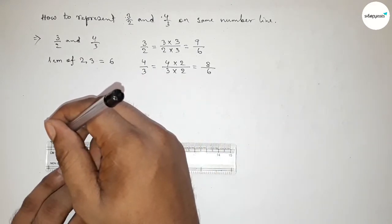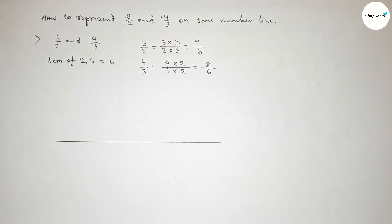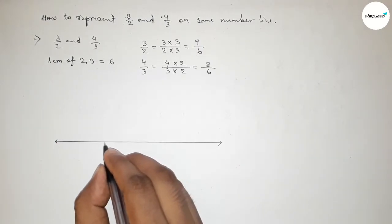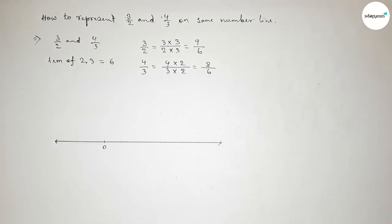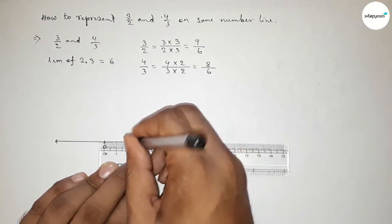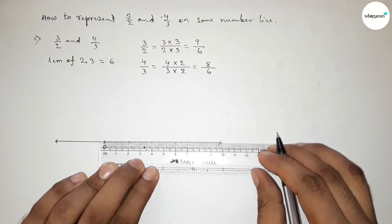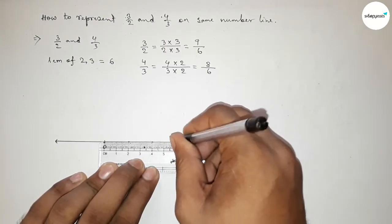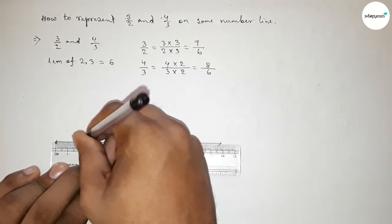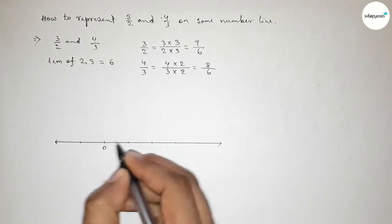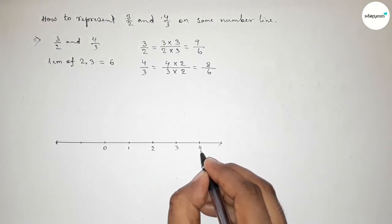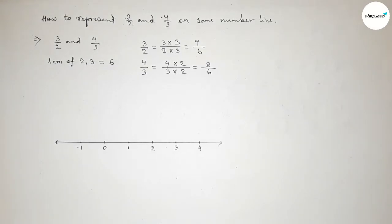Now we have to represent these two fractions on the same number line. First, draw a line of any length and place arrow marks on both sides. Taking the starting number as zero, I'm going to use a scale to mark numbers on the line, taking the distance between any two numbers as two unit lengths for easy calculation. Marking the numbers: 1, 2, 3, 4 on one side and minus 1 on the other.